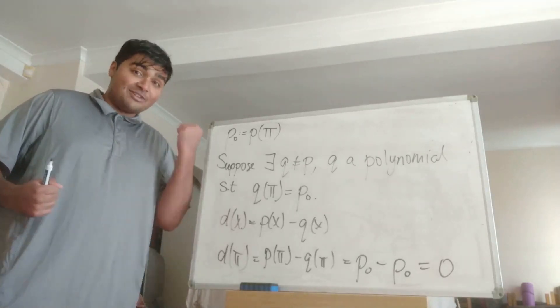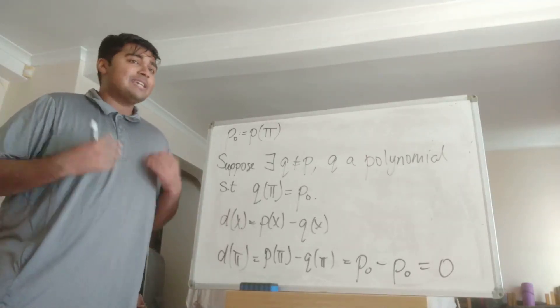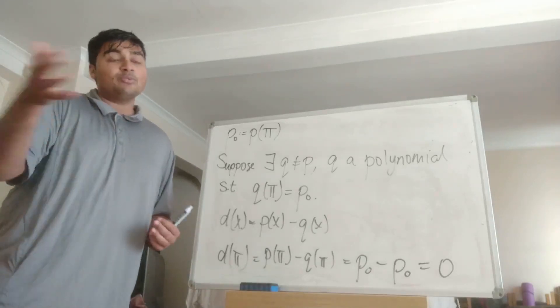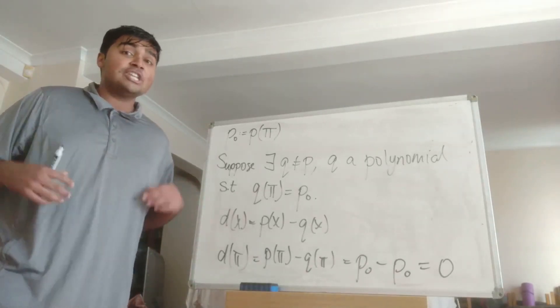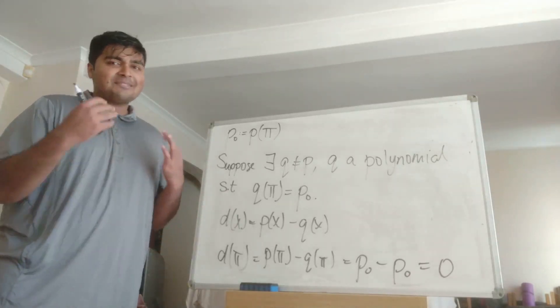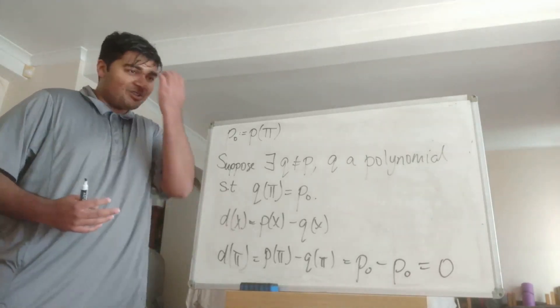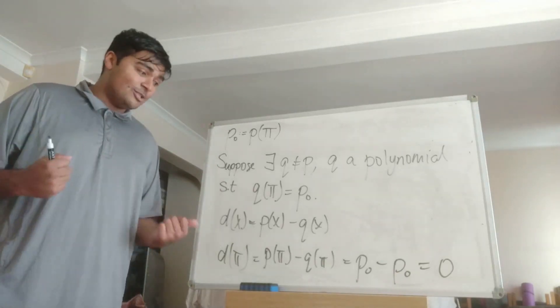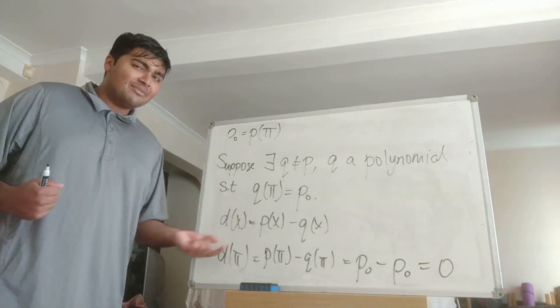Let me just go over that. Pi is a transcendental number which means if you take any non-zero polynomial with rational coefficients and plug in pi you can never get zero. So this is something I'm not going to prove, this is actually quite a high level property but it's a very well-known property that pi is transcendental.